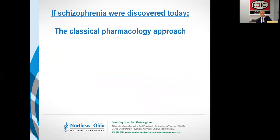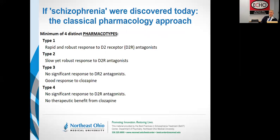But this is about pharmacotypes, and I started my life as a pharmacologist. If we were to discover schizophrenia today, people in my tribe would use the classical pharmacology approach — letting nature tell us what she has under the hood by simply looking at how systems respond to drug perturbation. Doing pharmacotyping, there are clearly four types of schizophrenia. Type one is a rapid and robust response, with 'rapid' usually measured in the time frame of days to weeks.